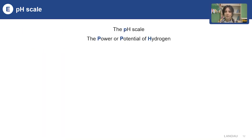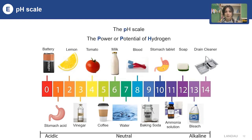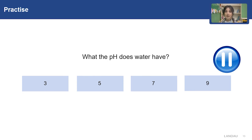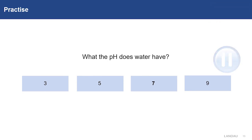Please pause the video and check the pH value of the given products. Now it's practice time again — what is the pH value of water? The answer is the third option: 7.